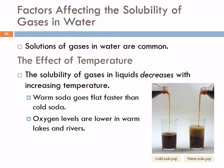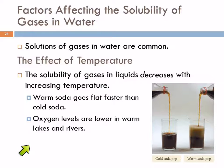This has implications for aquatic life. Oxygen levels are lower in warm lakes and rivers. Fish, turtles, and other aquatic animals need oxygen in the water.